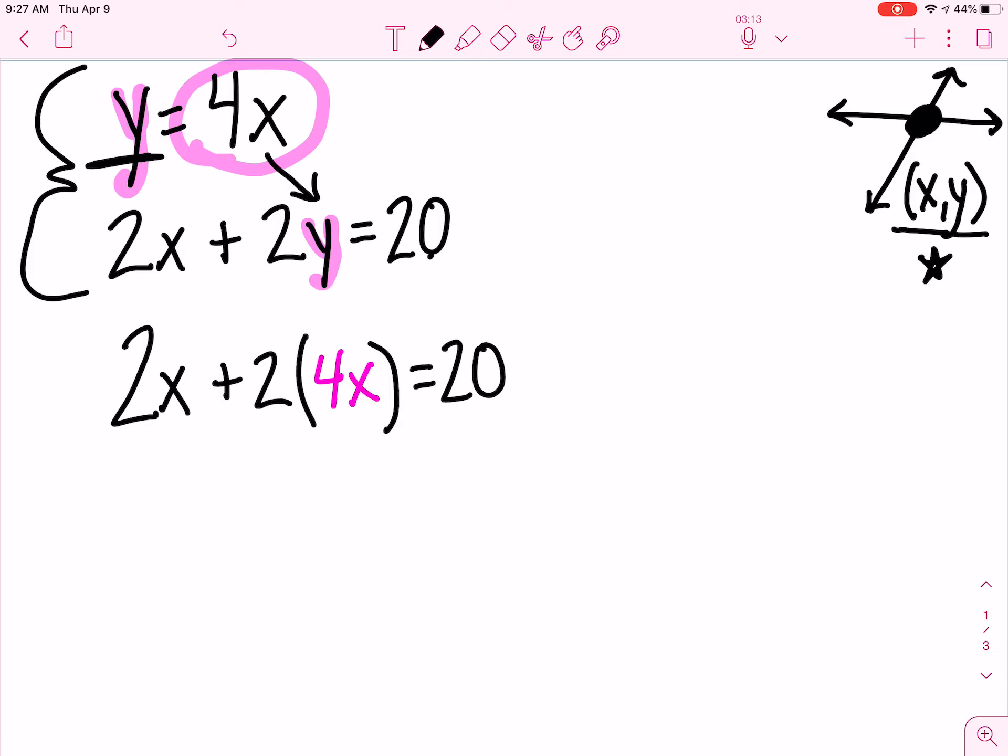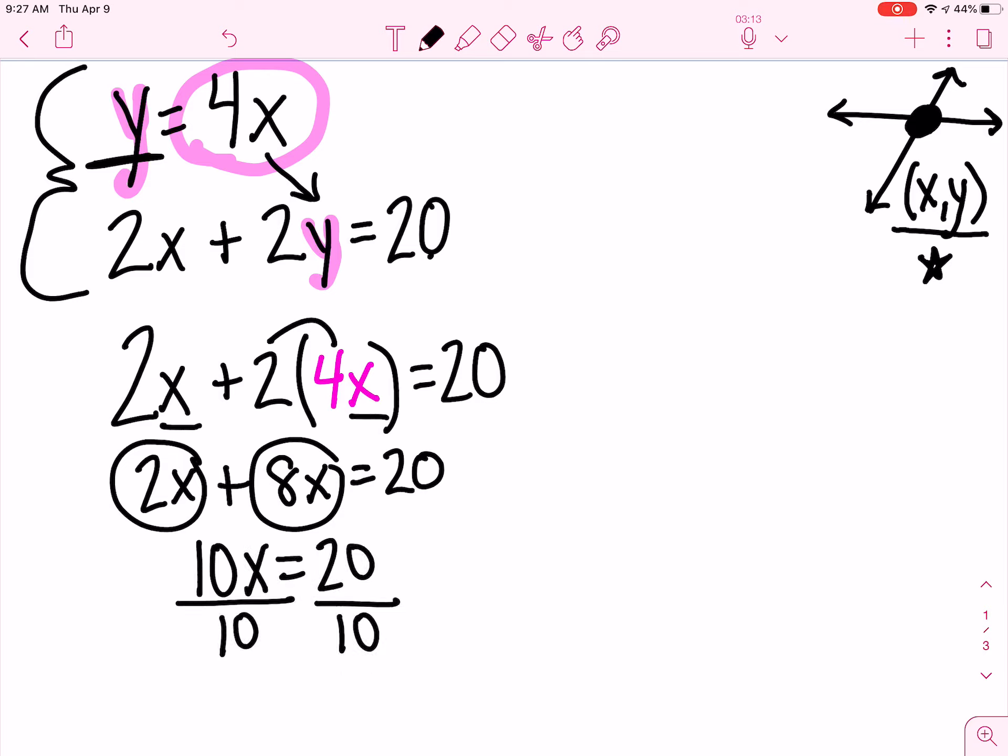The reason I had to substitute is now I just have x's here, so I'm going to be able to solve for x. So I have 2x plus 2 times 4x is 8x equals 20. I will combine like terms here to have 10x. I will divide to get x equals 2.